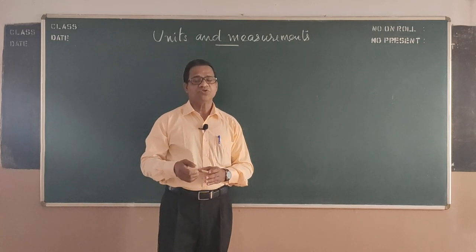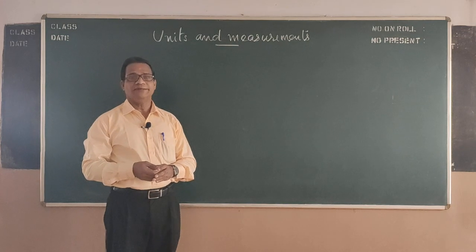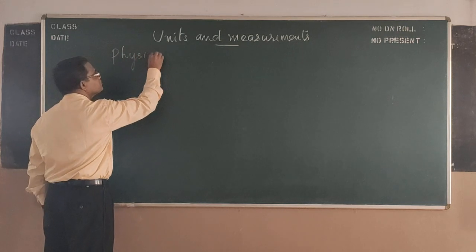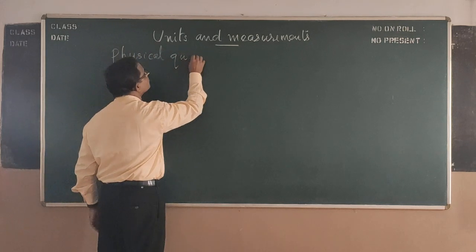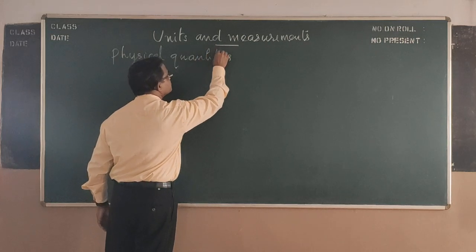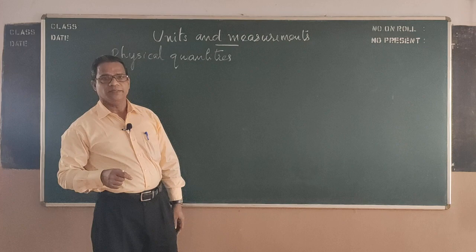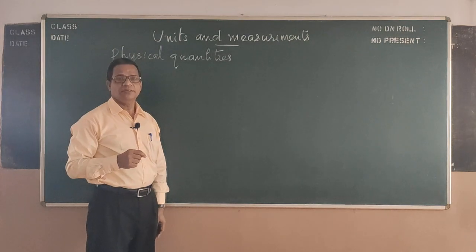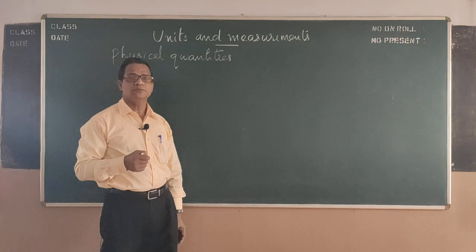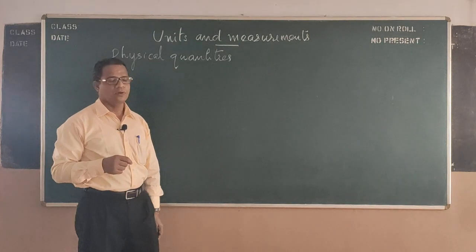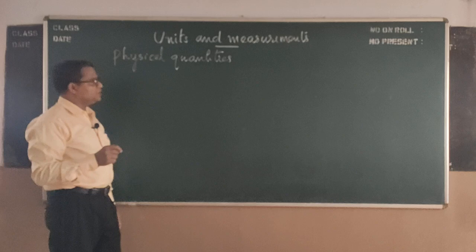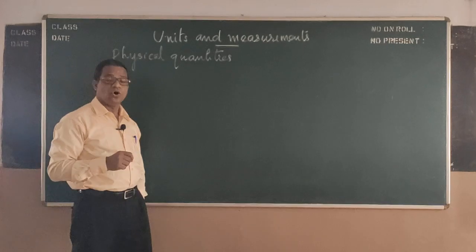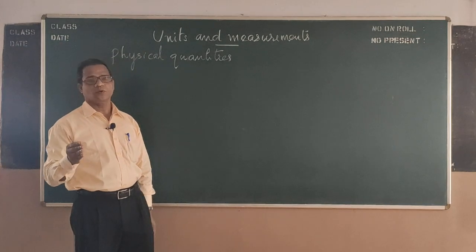So first of all we discuss physical quantities. What are physical quantities? It's very simple. Anything that can be measured directly or indirectly are called physical quantities.